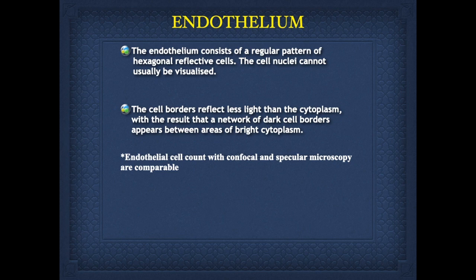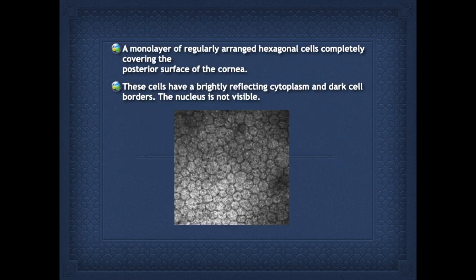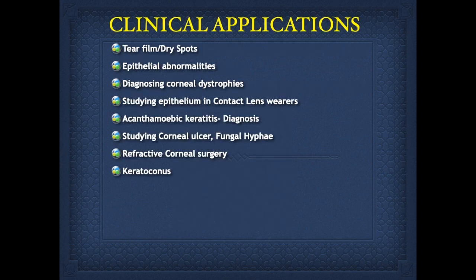The endothelium consists of a regular pattern of hexagonal reflective cells — a monolayer of regularly arranged hexagonal cells completely covering the posterior surface of the cornea. Clinical applications include anterior tear film and dry spots, epithelial abnormalities, diagnosing corneal dystrophies, acanthamoeba keratitis, studying fungal hyphae, and refractive corneal surgeries.